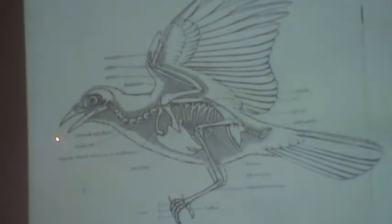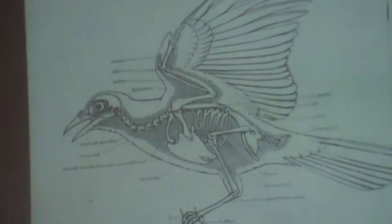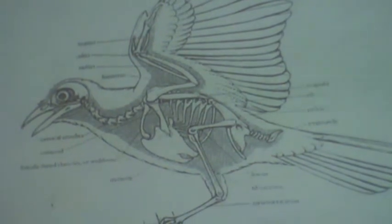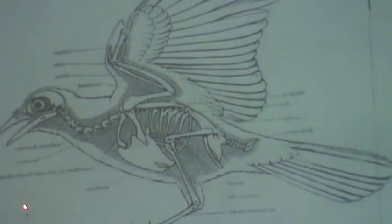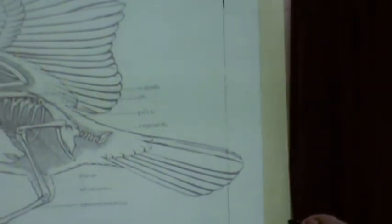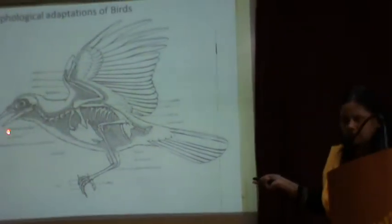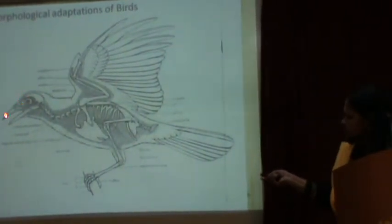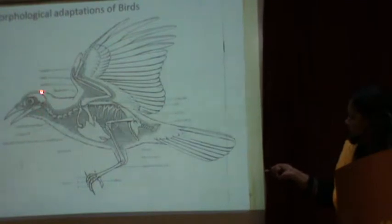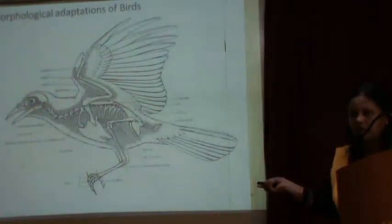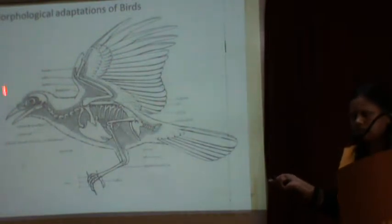In the head region, a lightweight beak is present. Jaws are modified into the beak. In birds, teeth are absent — teeth are heavyweight, and since these animals take flight, weight reduction is important. Eyes are large, so vision is good in birds. Nostrils are present, and the skull is made of cartilage as well as bone.